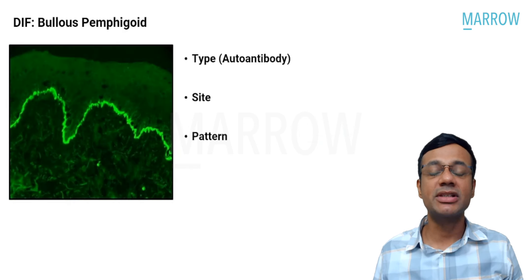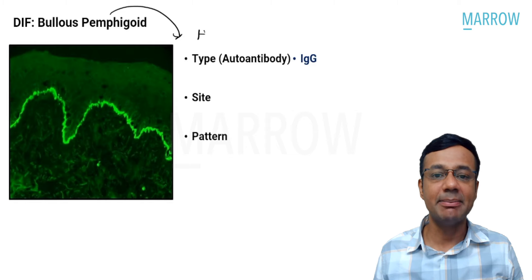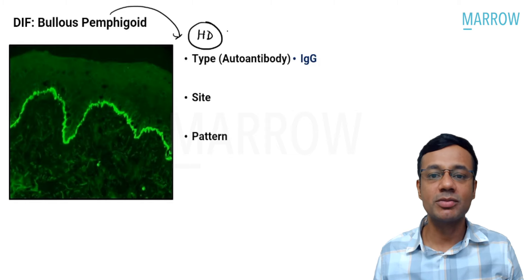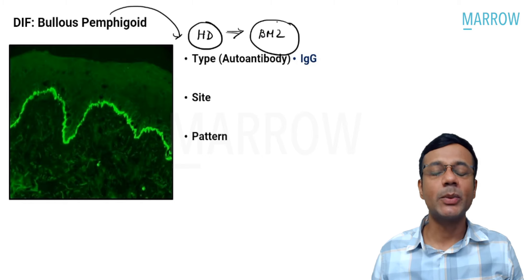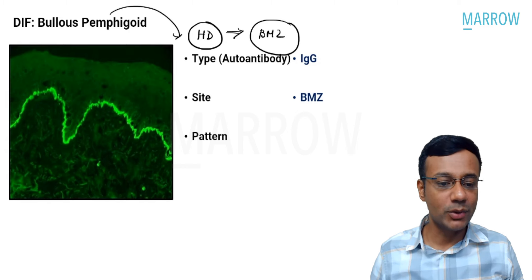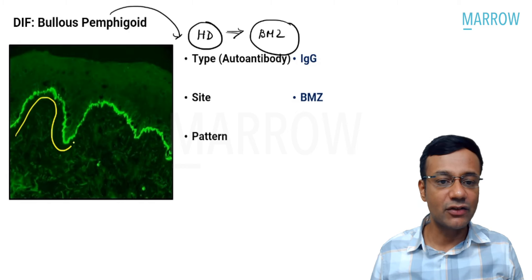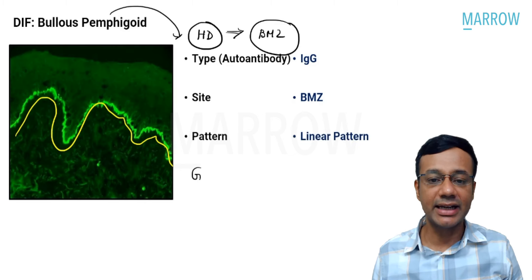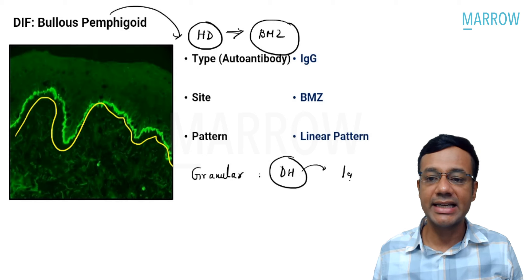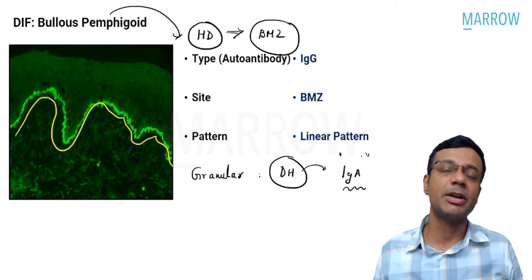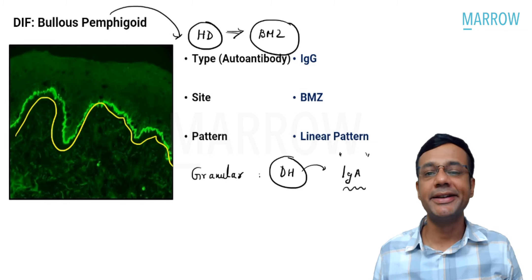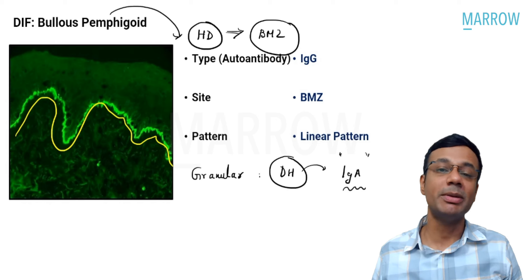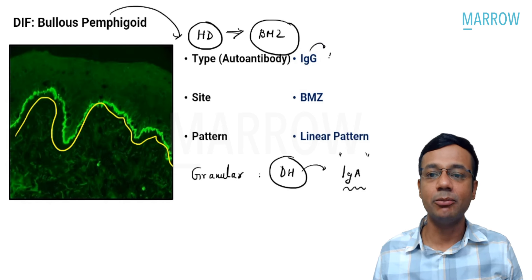In contrast, in bullous pemphigoid, the antibody deposited is also IgG and C3, but the site involves the hemi-desmosomes located within the basement membrane zone. The deposition is along the basement membrane zone in the form of a line, giving a linear pattern. In dermatitis herpetiformis, the pattern is granular and the deposited antibody is IgA, in contrast to IgG in bullous pemphigoid.